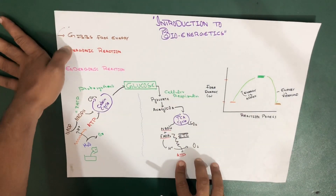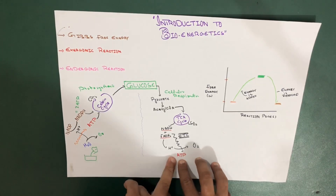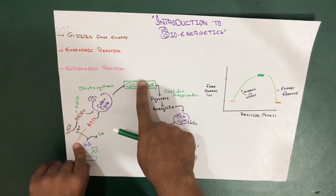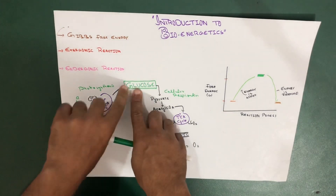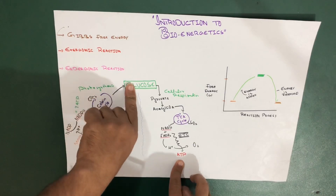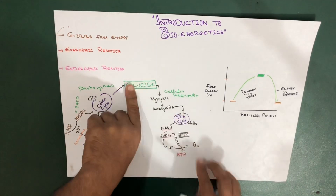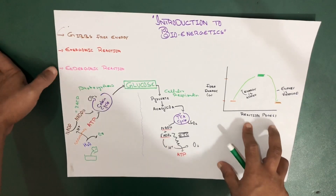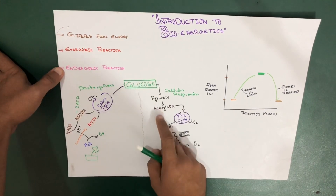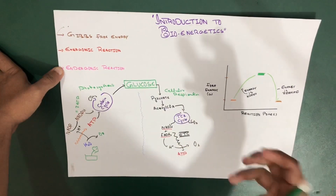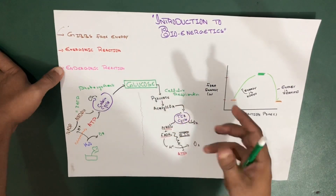Now that we have glucose, through cellular respiration it gives us ATP, which is our energy. We brought in energy from sunlight, converted it into glucose through photosynthesis, and now this stored energy is finally going to be released for use in endergonic reactions, which we'll talk about in just a bit. This glucose is going to be converted to ATP through the process of cellular respiration.